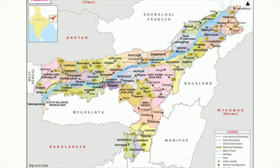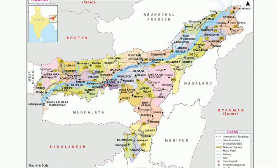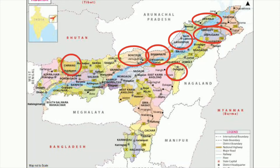Assam is divided by the Brahmaputra river into two halves, that is North Assam and South Assam. Dispur is the state capital and Guwahati city is the economic hub of the state. The most affected districts of Assam due to floods are Dhemaji, Lakhimpur, Biswanath, Sonitpur, Chirang, Golaghat, Dibrugarh, Jorhat, etc.